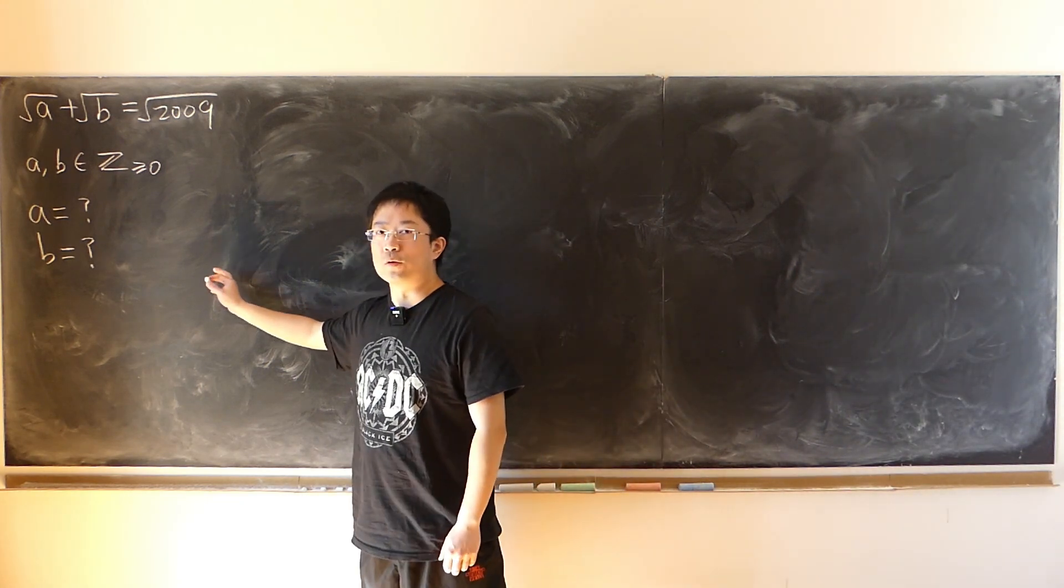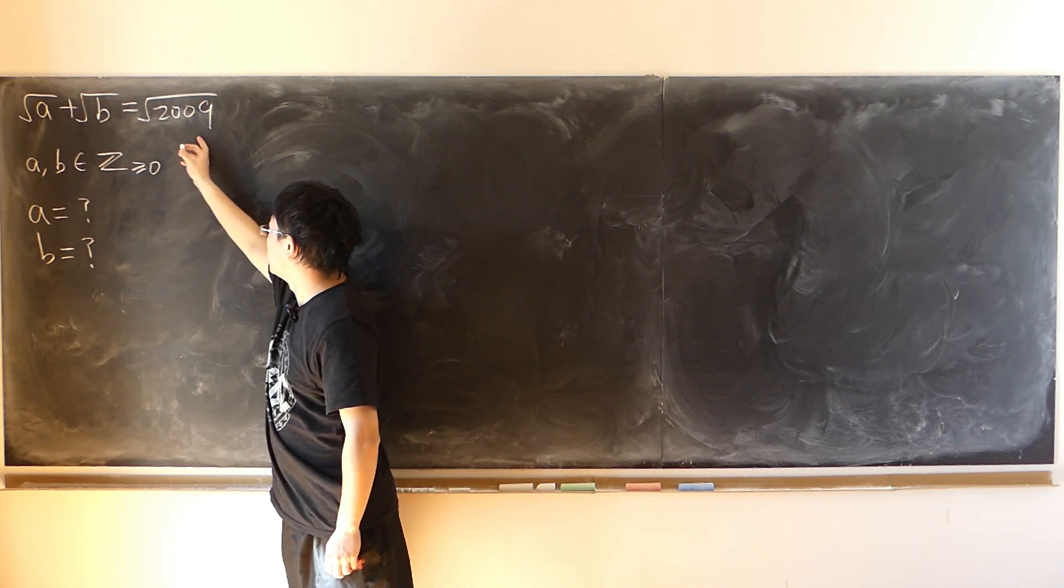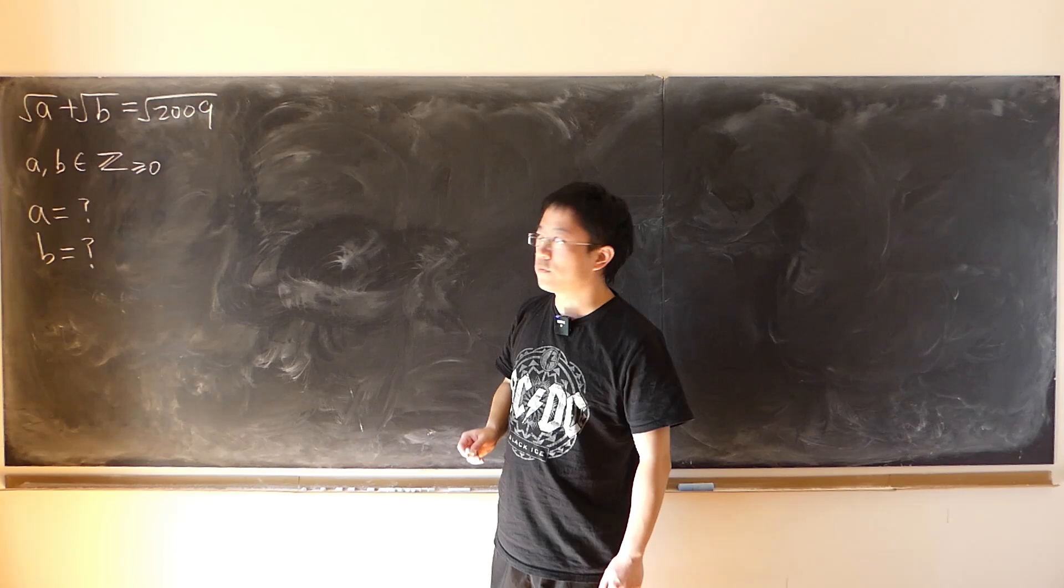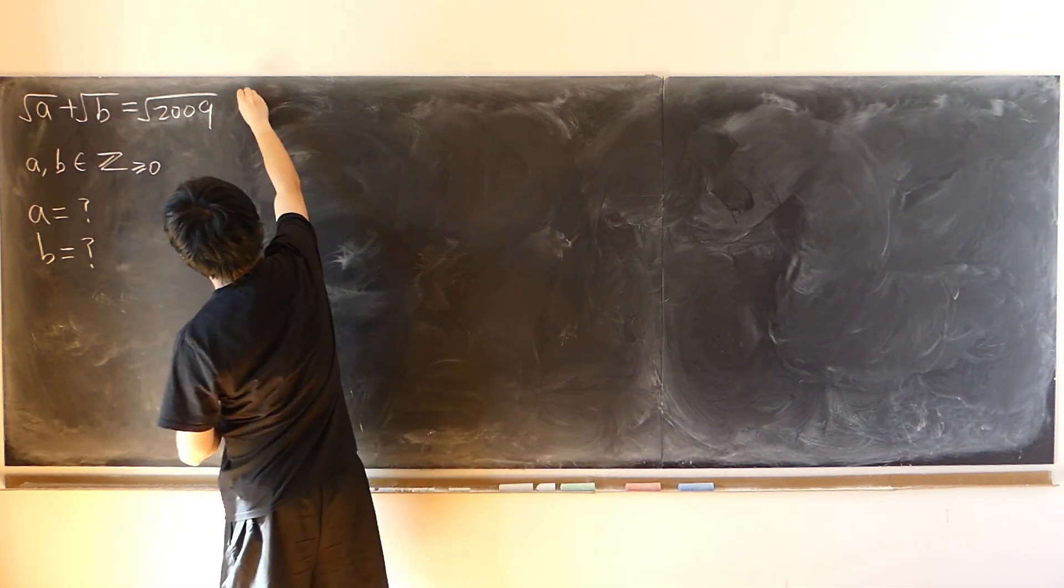Find all the non-negative integer solutions given square root of a plus square root of b equals square root of 2009. So instead of squaring both sides, we first move this term onto the other side, then square both sides.